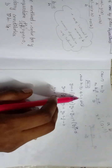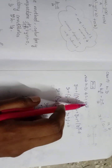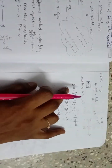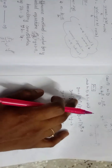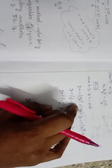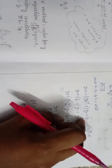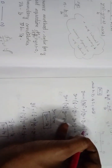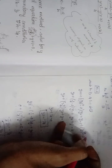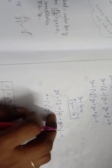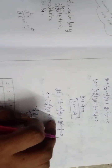Substitute h = 1/2 and i = 1 into equation 2. We get y₂ + (1/4 - 2)y₁ + y₀ + 1/4 = 0, which gives y₂ + (1/4 - 2)y₁ + y₀ + 1/4 = 0.